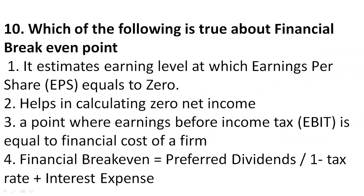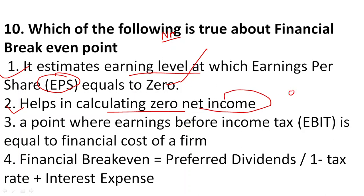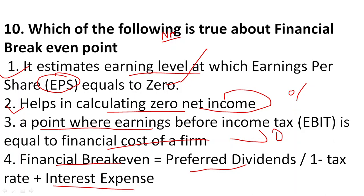Last question: which of the following is true about financial breakeven point? The breakeven point is where there is no profit. The financial breakeven point is the earning level at which earning per share equals zero, meaning zero net income. It is the point where earning before income and tax equals the financial cost of the firm. The formula for financial breakeven point is preferred dividends divided by one minus tax rate, plus interest expenses. So these were the 10 questions for today.